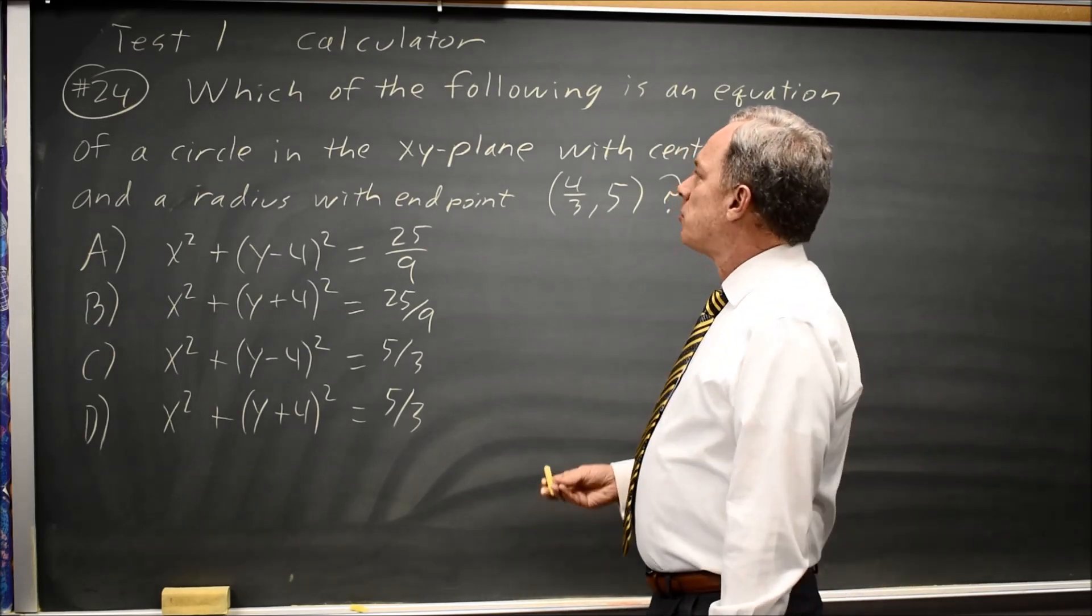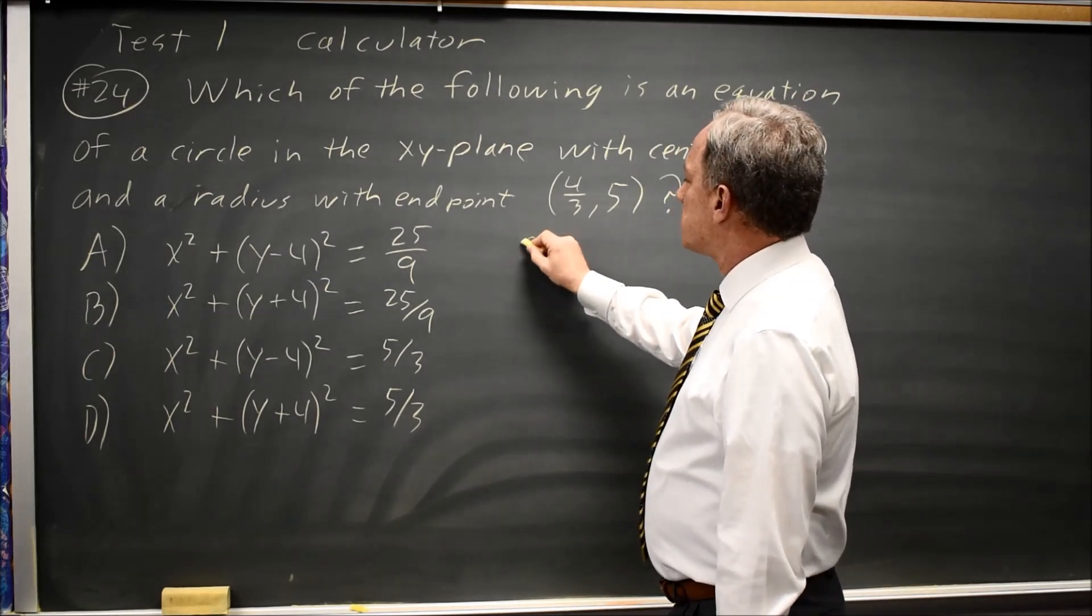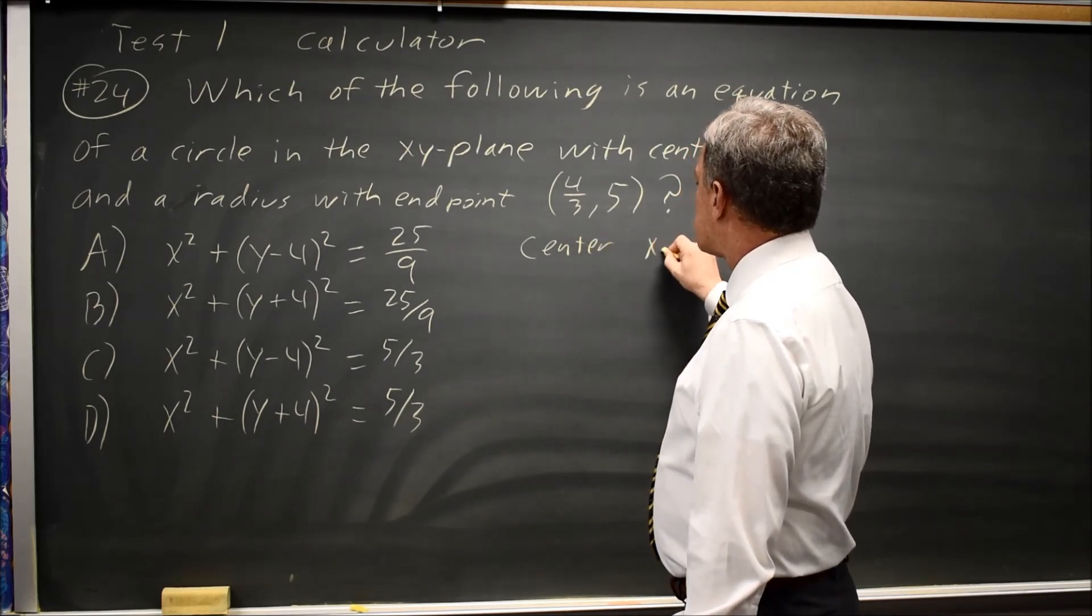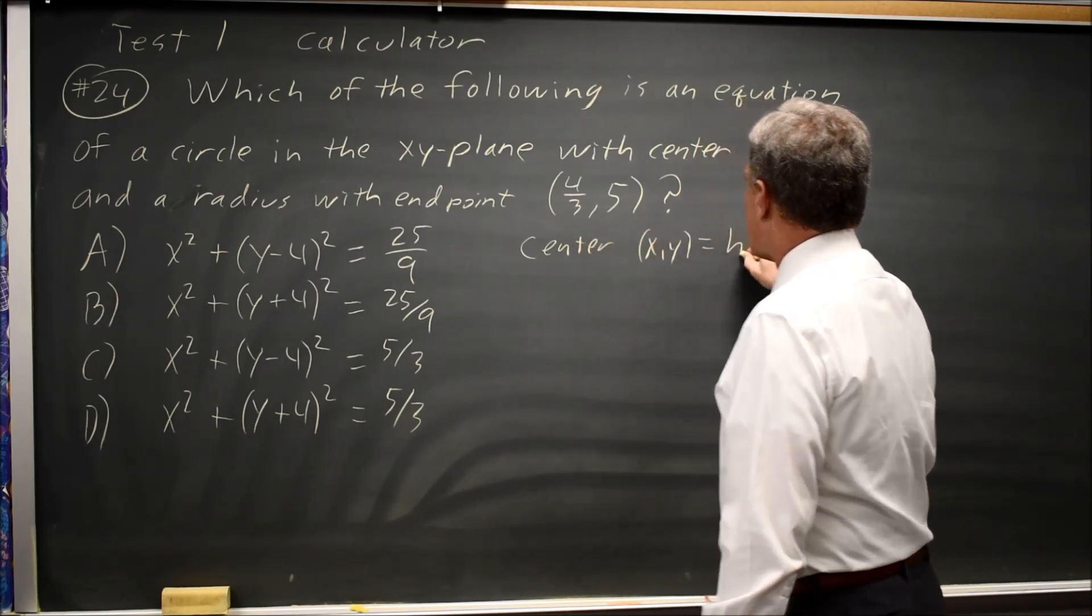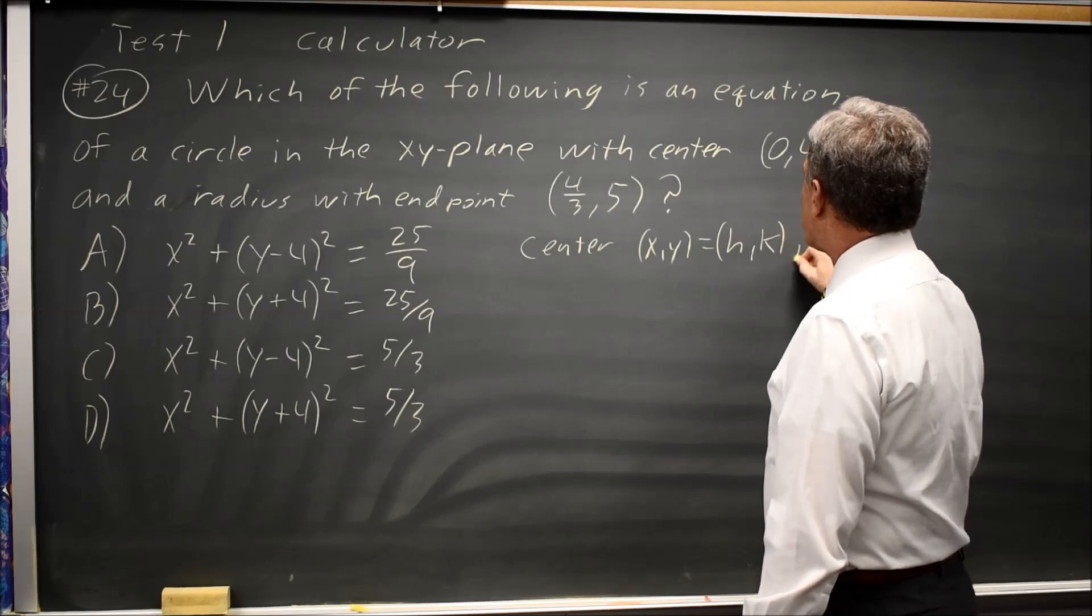When you get an equation like this, always remember that for a circle with center (h,k) and radius r,